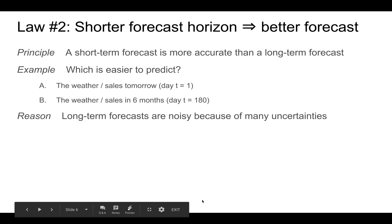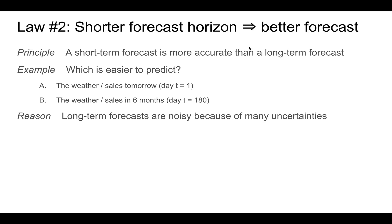The second law states that a shorter forecast horizon usually gives you a better forecast than a long-term forecast horizon. For example, it's much easier to predict the sales or the weather tomorrow than it is to predict the weather or sales in six months. When you're trying to predict the weather tomorrow, you know about the weather today, the temperature, where the clouds are, and how the wind is blowing. But six months from now, we don't know any of these things. So long-term forecasts tend to be noisier because there are many uncertainties which we're not able to observe.